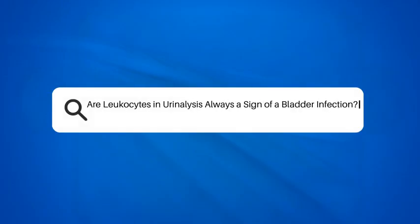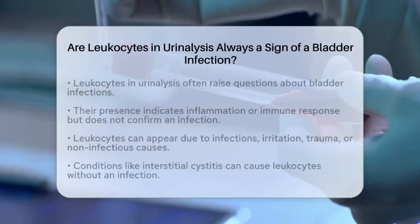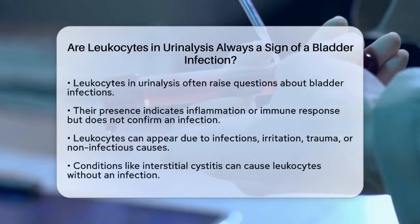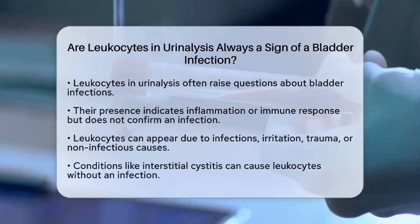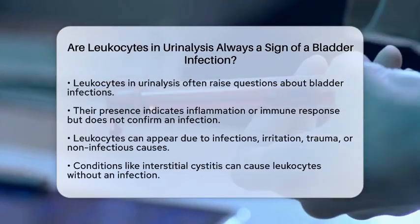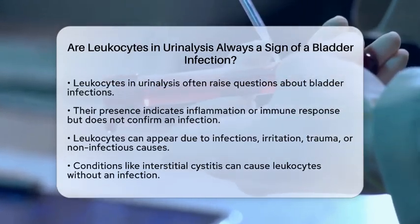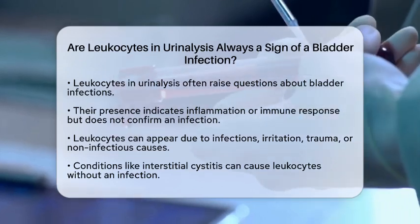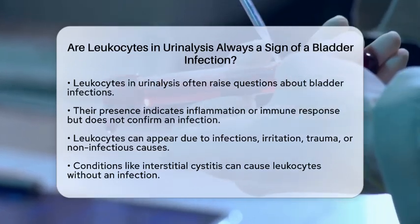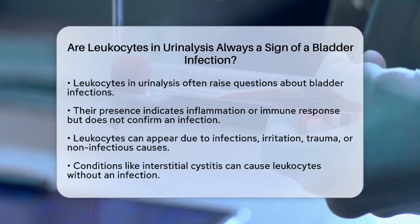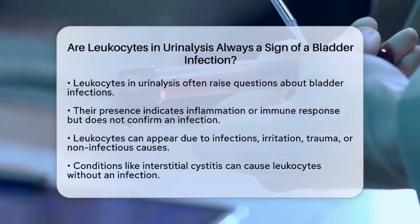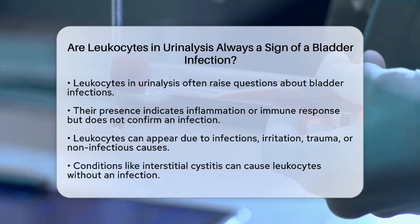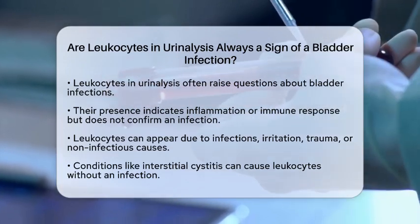Are leukocytes in urinalysis always a sign of a bladder infection? When we see leukocytes, or white blood cells, in a urinalysis, it often raises questions. Are they always a sign of a bladder infection? The answer is no. While leukocytes indicate some level of inflammation or immune response in the urinary tract, their presence alone does not confirm a urinary tract infection.